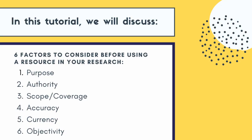In this tutorial, we will discuss six factors to consider before using a resource in your research: one, purpose; two, authority; three, scope and coverage; four, accuracy; five, currency; and six, objectivity.